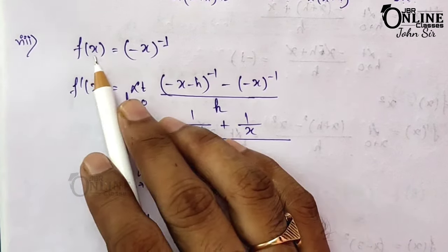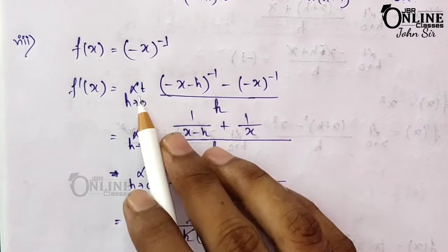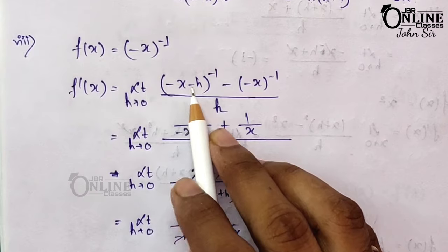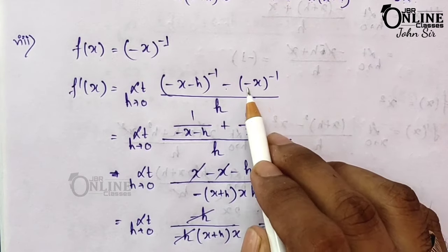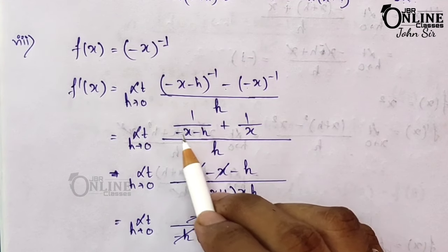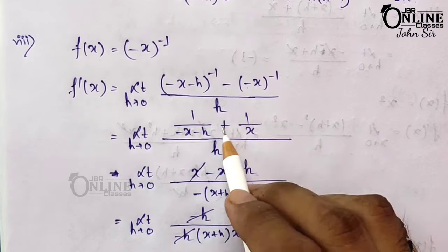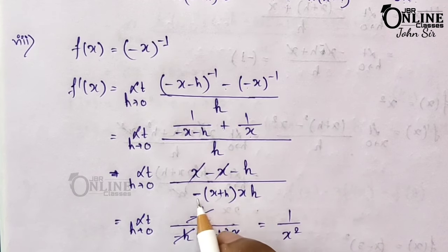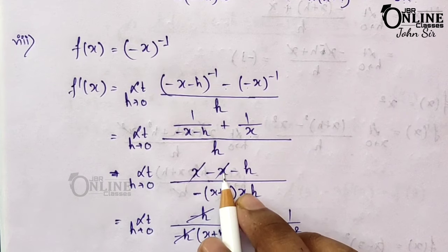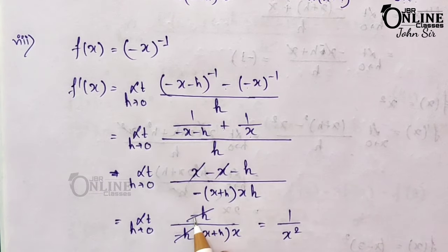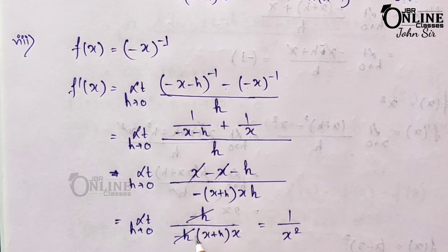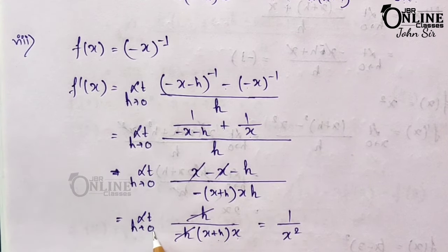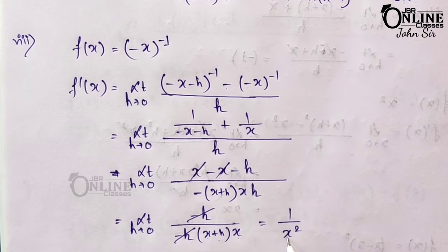Number 8: f(x) = (-x)⁻¹. So f'(x) = limit h→0 of [(-x-h)⁻¹ - (-x)⁻¹] / h = [1/(-x-h) + 1/x] / h. Taking LCM as x(-x-h): [x - (-x-h)] / [x(-x-h)·h] = h / [x(-x-h)·h]. After h cancels, substituting h→0: x(-x-0) = -x², so f'(x) = 1/x².